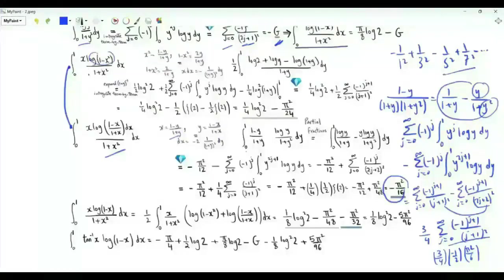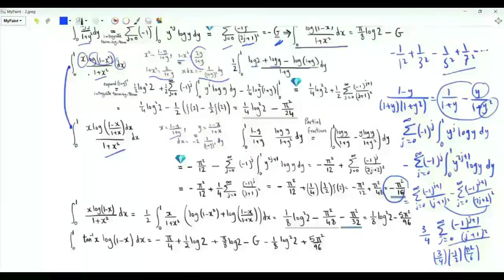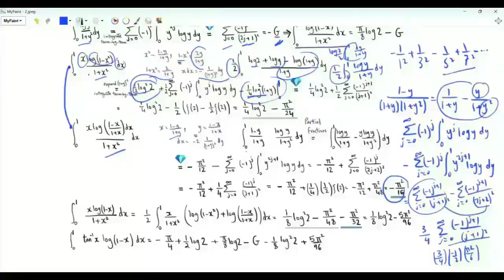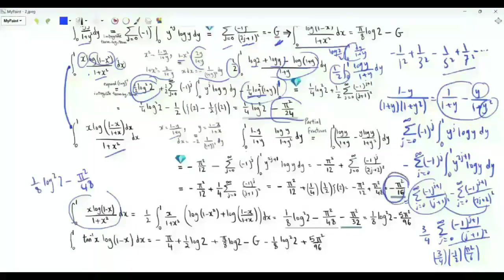For the integral involving log(1 minus x²), use the substitution x² equal to (1 minus y) over (1 plus y), so 1 minus x² is 2y over (1 plus y) and 1 plus x² is 2 over (1 plus y). Applying the logarithm gives log 2 plus log y minus log(1 plus y). We have three integrals: log 2 over 2 times the integral from 0 to 1 of 1 over (1 plus y), giving log²2 over 2; the term involving log(1 plus y) gives minus log²2 over 4; combined these give log²2 over 4. The third integral is one-half times the integral of log y over (1 plus y), giving minus pi² over 24. The value of this integral is log²2 over 8 minus 5pi² over 96.